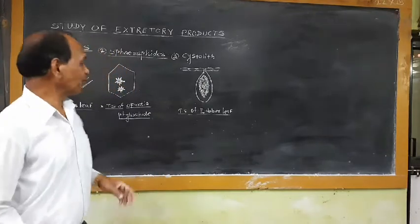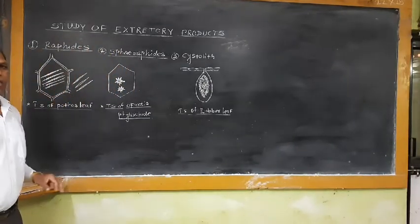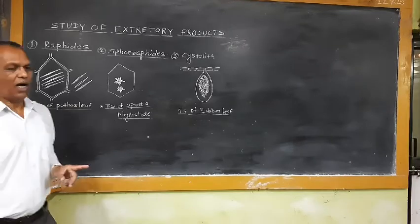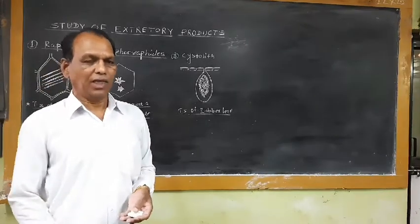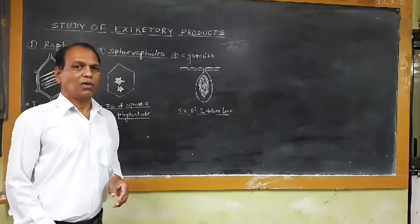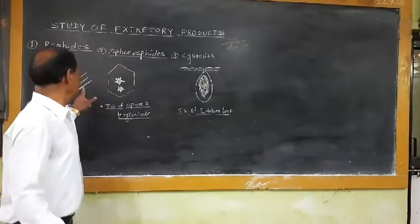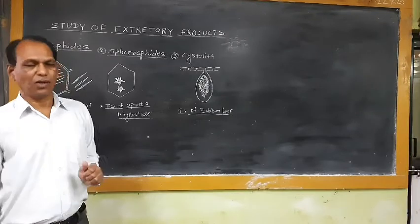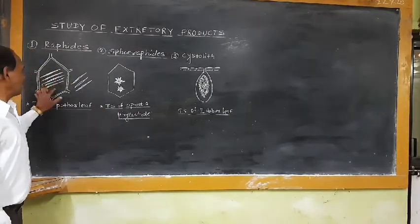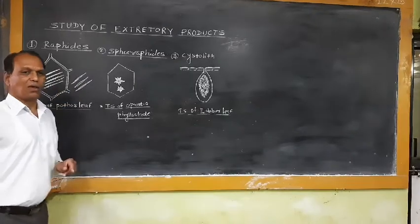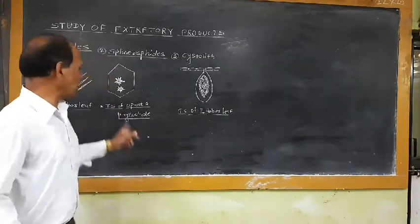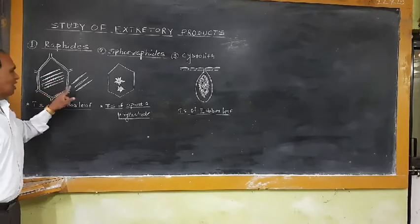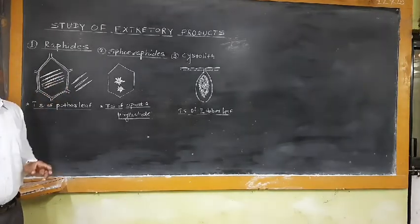The raphides are needle-like crystals of calcium oxalate. These raphides are produced as waste compounds and are looking like sponge spicules or looking like needles. That means they are having tapering ends and somewhat broader needle portion. For example, in many plants, the living cells or parenchyma cells possess these needle-like calcium oxalate crystals. For example, if we take the transverse section of Pothos petiole or Pothos leaf, these needle-like structures known as raphides are very commonly observed.